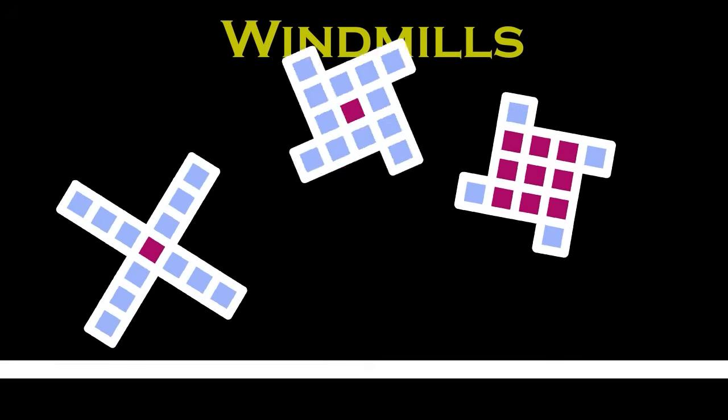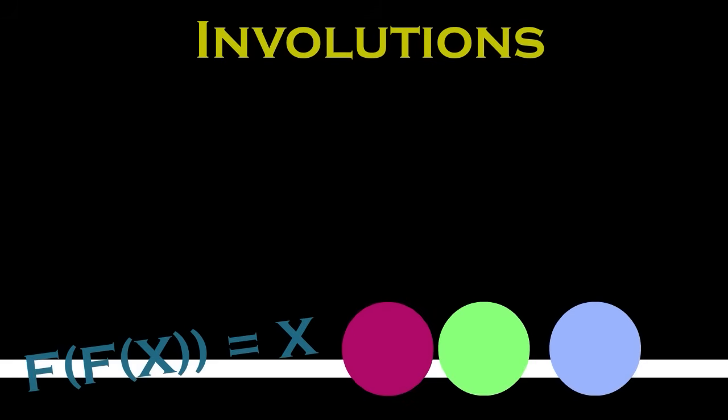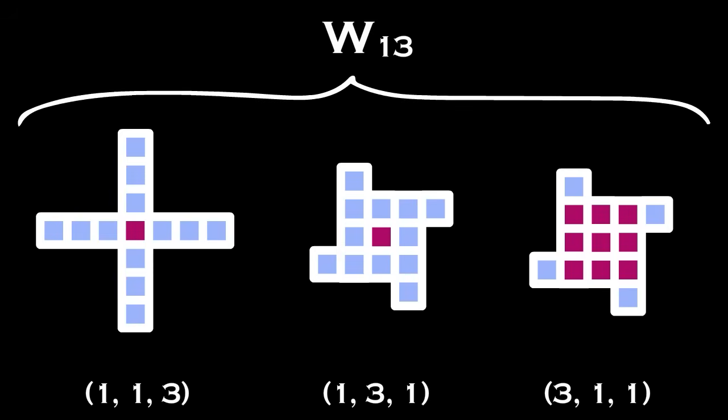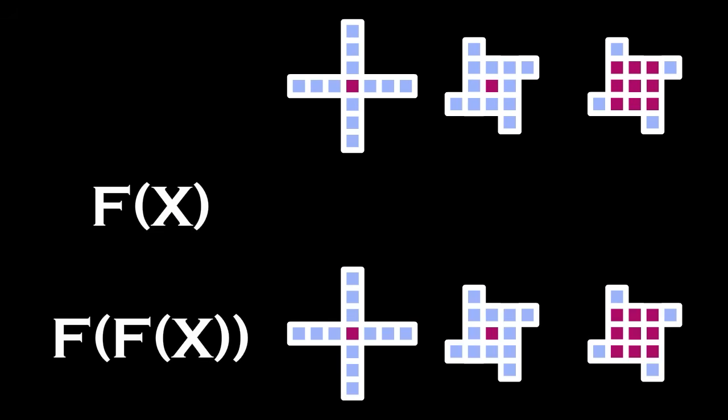So far, we've looked at two very different concepts, windmills and involutions. Let's now combine them. If we have the set of windmills for a given prime p, what is the simplest involution you can think of? One involution is what I'll call the flip map.